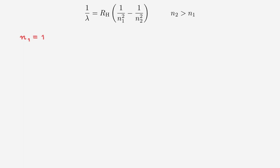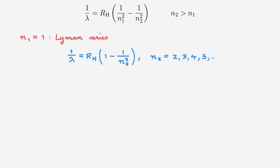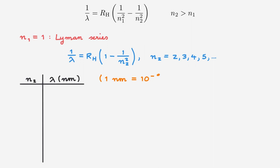Let's start with N1 equals 1, which is the ground state. This spectral series therefore corresponds to transitions from any excited state to the ground state, and it's called the Lyman series, discovered by Theodore Lyman in 1906. If we insert N1 equals 1 into the expression, we get that the inverse photon wavelength is equal to the Rydberg constant times 1 minus 1 over N2 squared. Since N2 must be larger than N1, it can take any value starting from 2, 3, 4, 5, and so on in integer steps. We draw a table with N2 in the first column and the wavelength in nanometers in the second column — as a reminder, 1 nanometer equals 10 to the minus 9 meters.